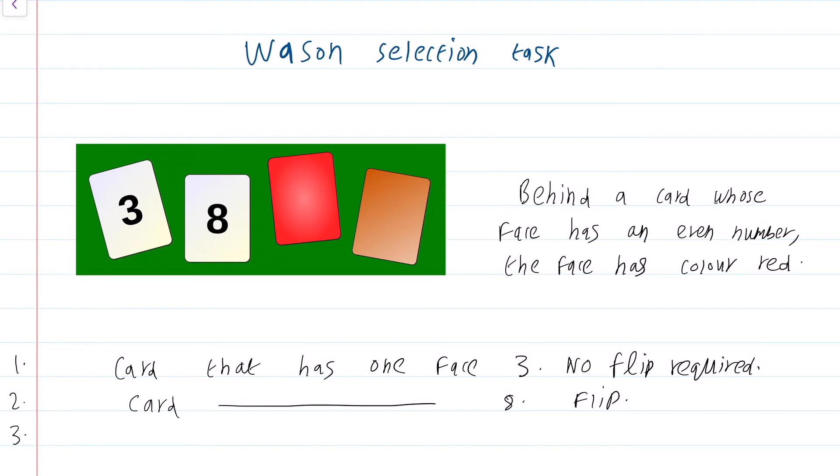Now, third one, here is where some people make a mistake. Some people say you need to flip the card that has the face red. But you actually do not need to do that. Why? Because there are only two possibilities for the opposite face, either an odd number or an even number. If it is an odd number, then regardless of whether this is red or brown or black or cyan, it really does not matter. Because the proposition that we have does not assert anything about cards that have one face an odd number.